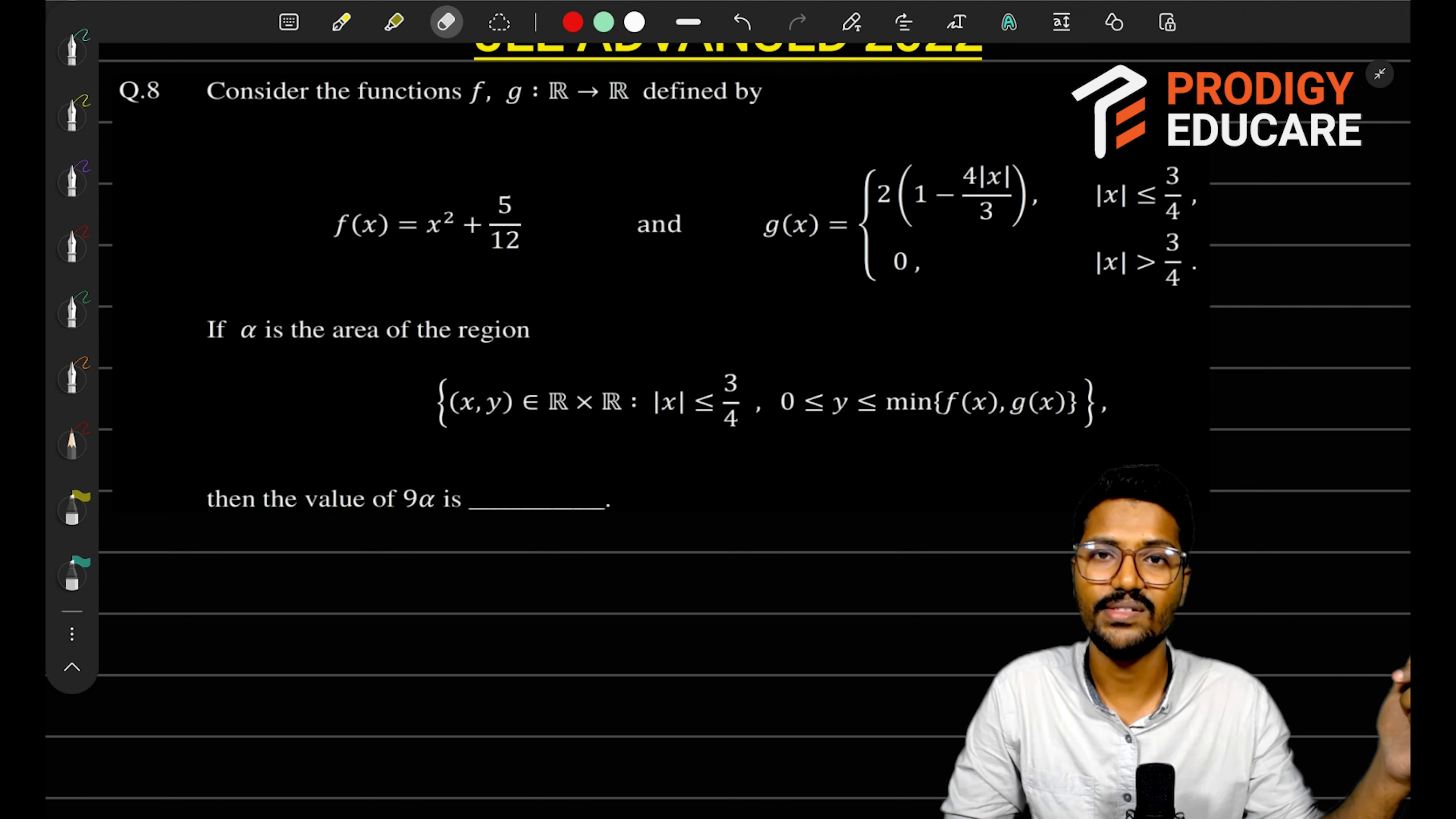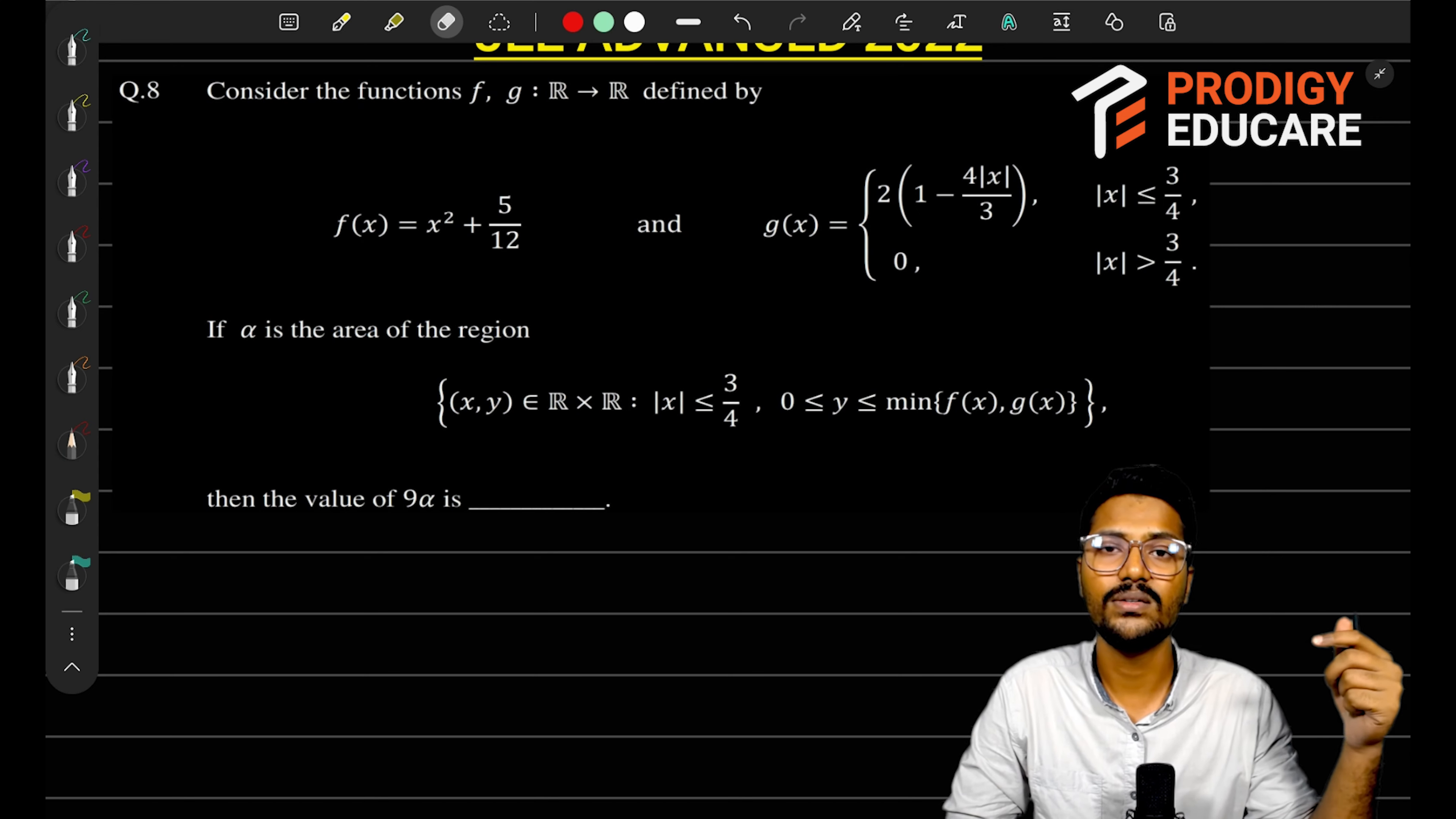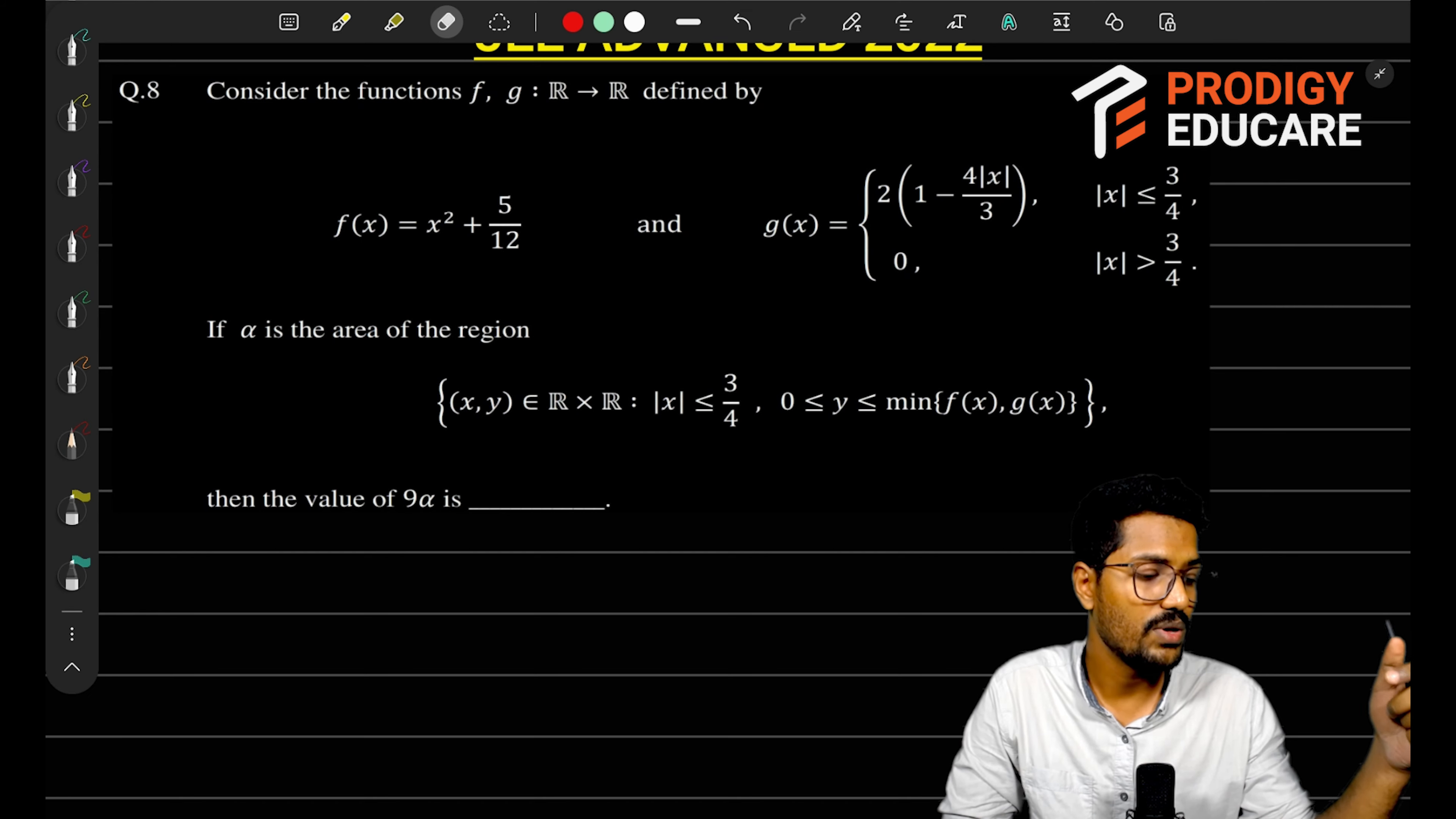We're talking about two functions, f(x) and g(x). Whenever you want to find the area between two functions, you have to find the intersection point of those two functions. So you need the intersection point of these two functions.